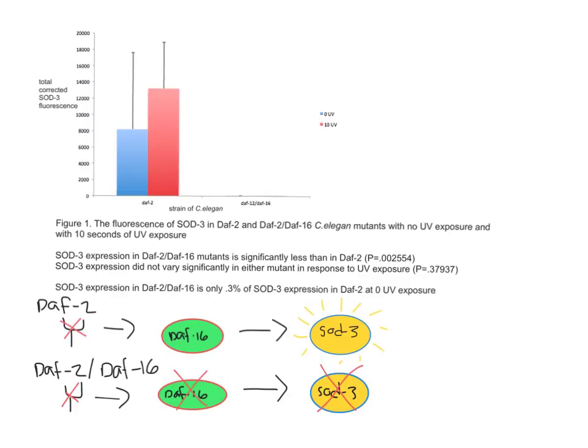The high levels of SOD3 activity in DAF2 are due to the suppression of the tyrosine kinase channels, allowing DAF16 to activate SOD3 activity.